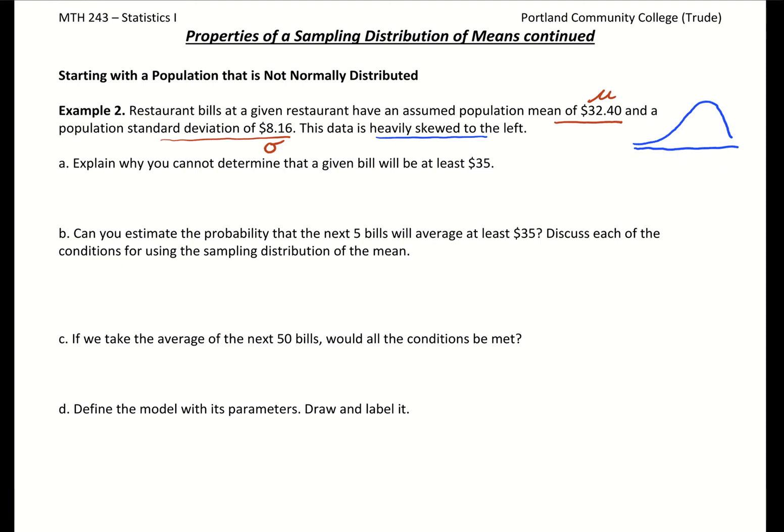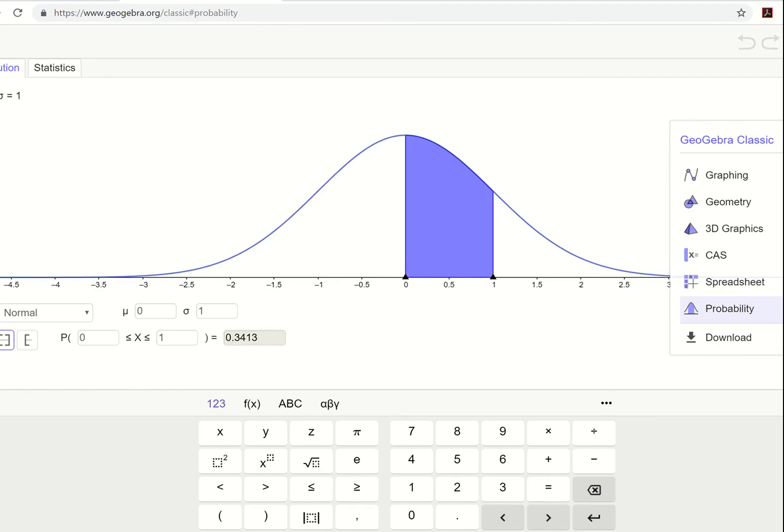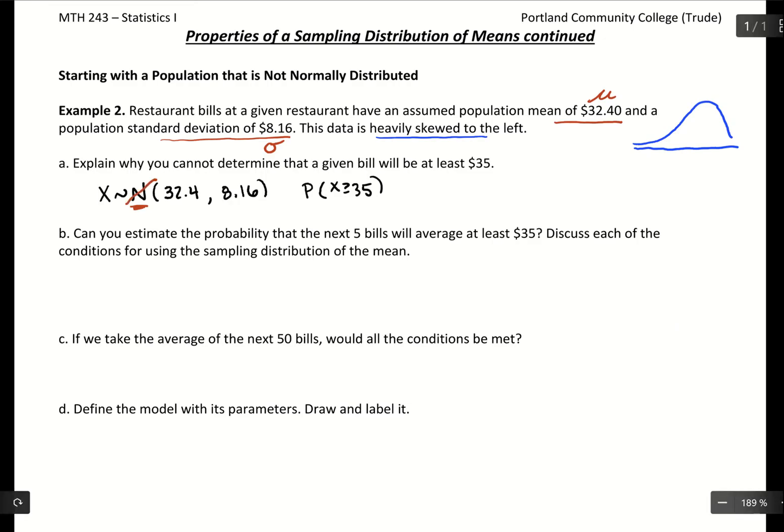Explain why you cannot determine that a given bill will be at least $35. What this is trying to get us to do is use the mean and standard deviation to find the probability of being greater than or equal to 35. However, one key piece of our notation is n. Even in GeoGebra, it shows us a perfectly bell-shaped curve, but we can't use that since we know our curve is actually left-skewed. We can't find probabilities with skewed distributions.